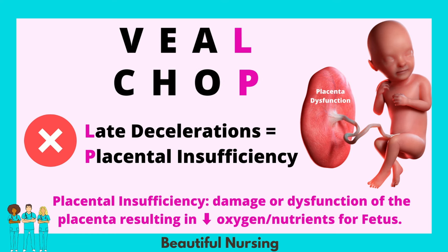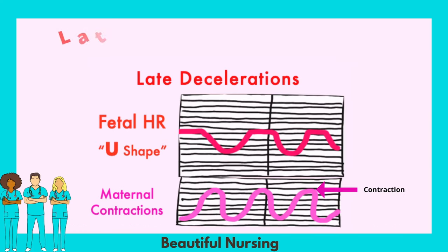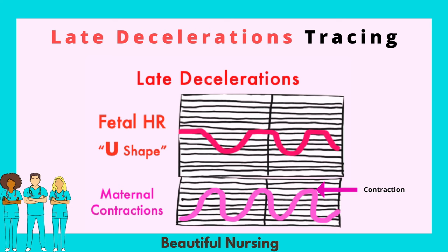Versus late decelerations — late decelerations are a cause for concern. These are usually due to uteroplacental insufficiency. With this late decelerations tracing, just remember it's due to uteroplacental insufficiency. A way to remember this tracing is that the fetal heart rate, which is the line in red, has a U shape — U for uteroplacental insufficiency. The pink line is the maternal contractions, and you'll notice that each time mom has a contraction, the fetal heart rate does not respond — it stays the same and then dips.